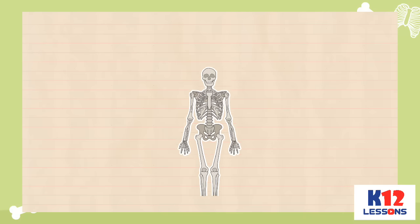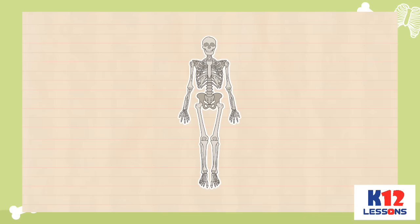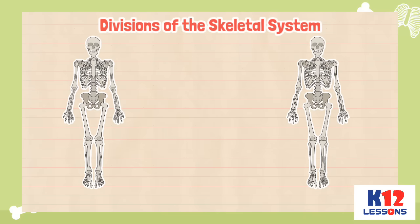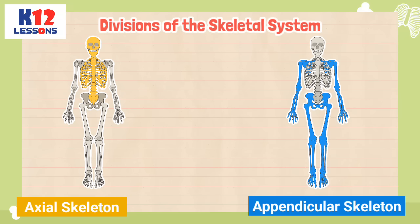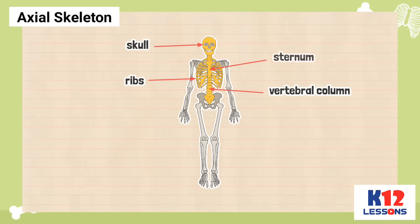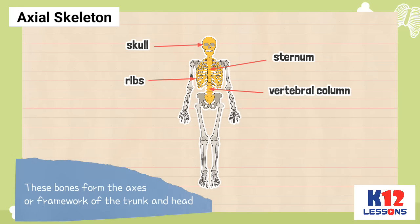The skeletal system is mainly composed of bones, which are classified into two divisions: the axial and the appendicular skeleton. The axial skeleton includes the skull, vertebral column, ribs, and sternum. These bones form the axis or framework of the trunk and head.